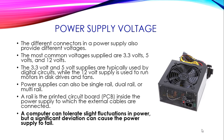So what is a rail? A rail is the printed circuit board inside the power supply to which the external cables are connected. Most importantly, a computer can tolerate slight fluctuations in power, but a significant deviation can cause power supply failure.